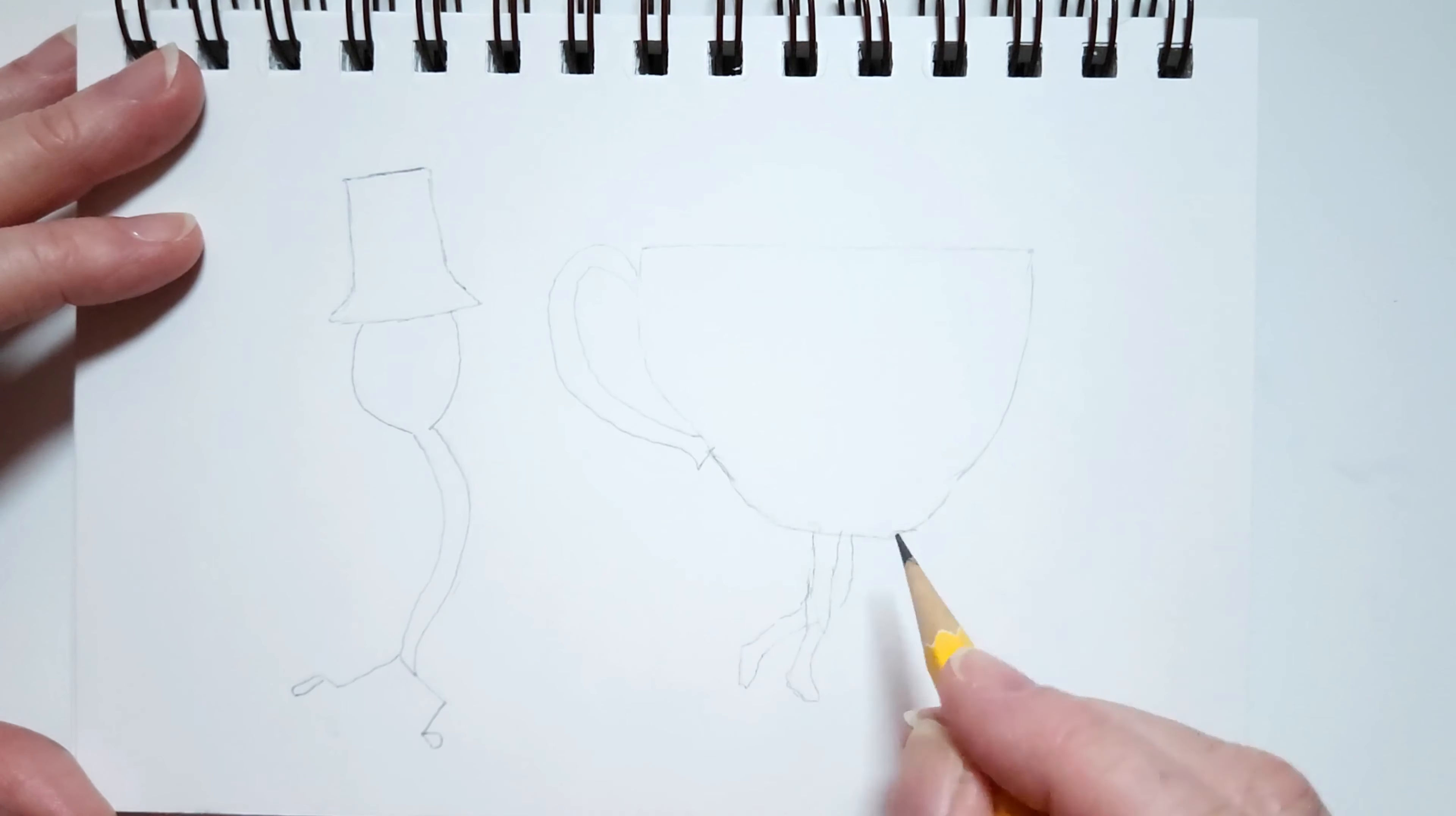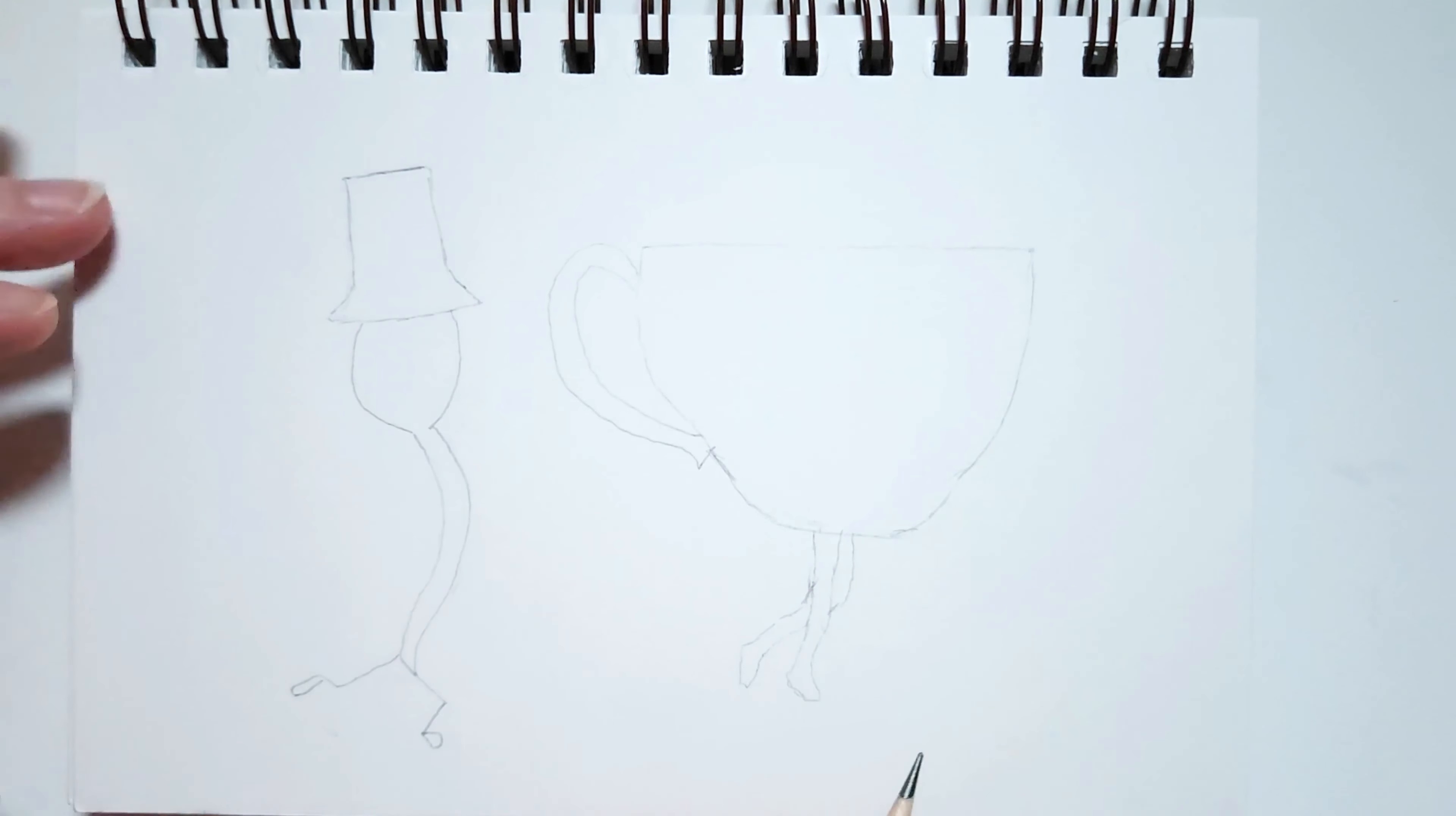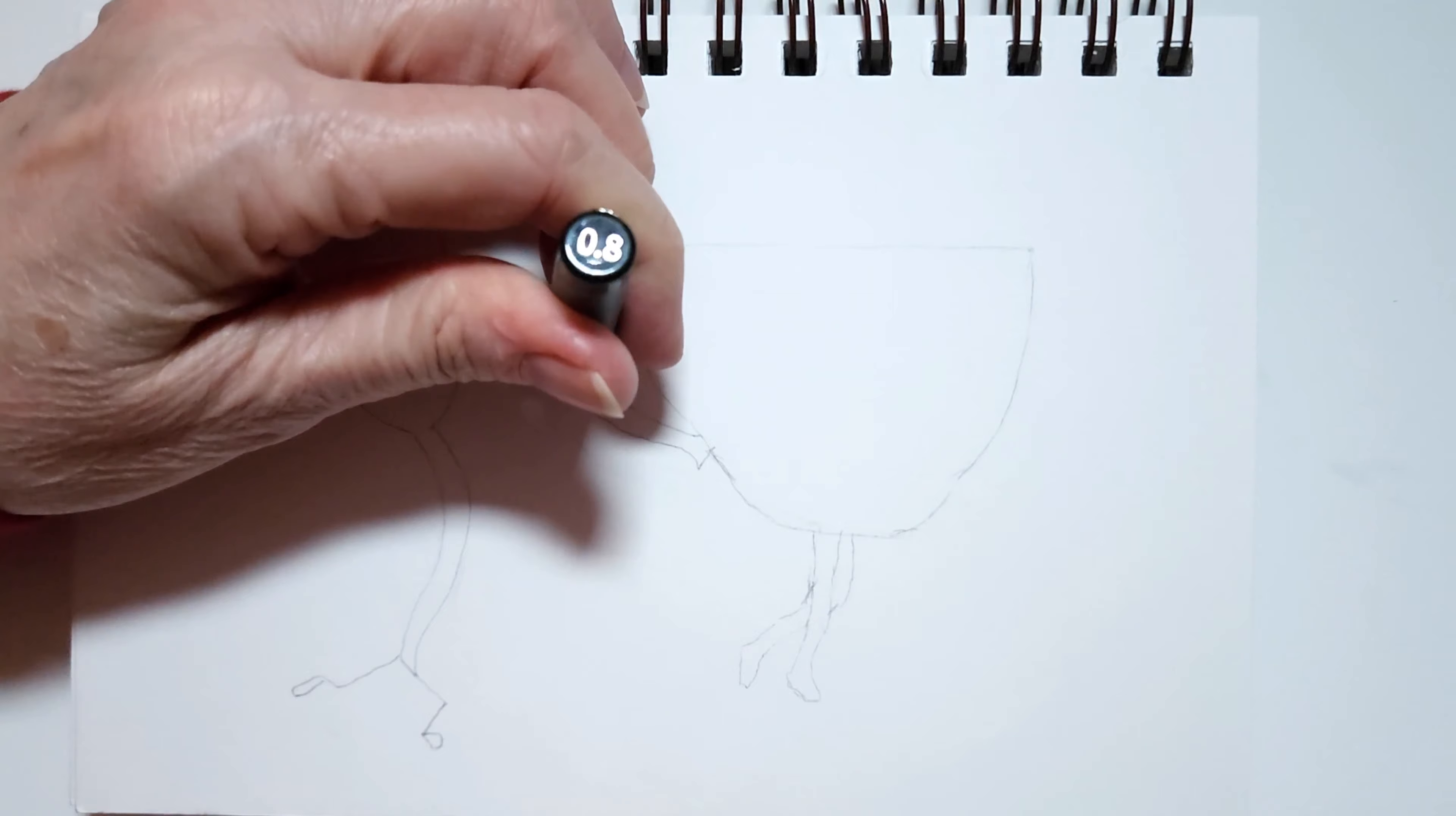There we go. I'm going to pull out my little mechanical eraser here. Hello, Lucy. My other little dog just came to say hi. Okay, that'll be good enough. And I'm not going to use my pencil anymore. I'm going to start using my marker. And this one is 0.8. Okay.